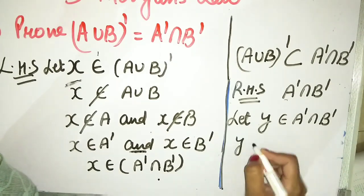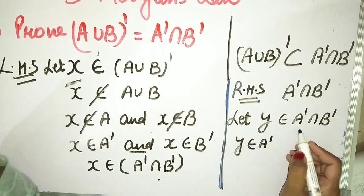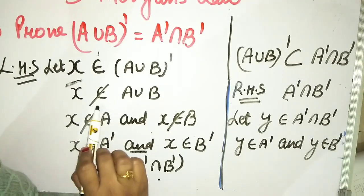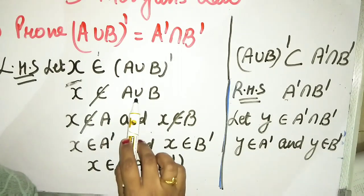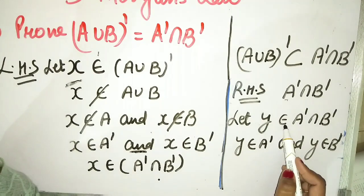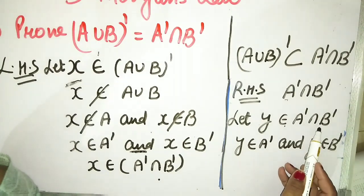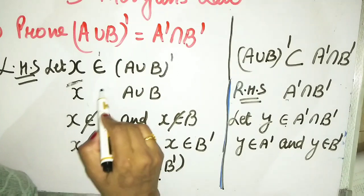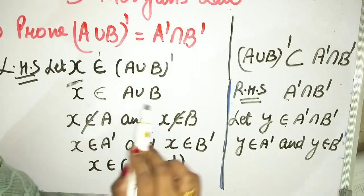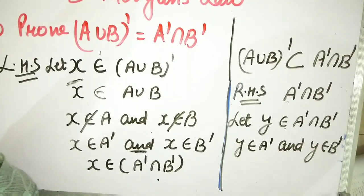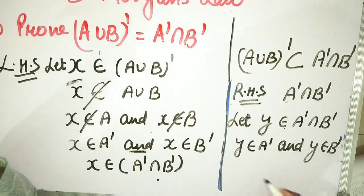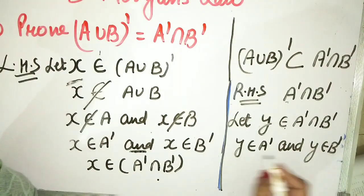Think that y belongs to A dash, and by intersection — which means 'and' — y belongs to B dash. When something doesn't belong to a union, you need to use the union definition. If x belongs to A union B, that means x belongs to A and x belongs to B. So here, since it doesn't belong, union becomes intersection in the complement sense.